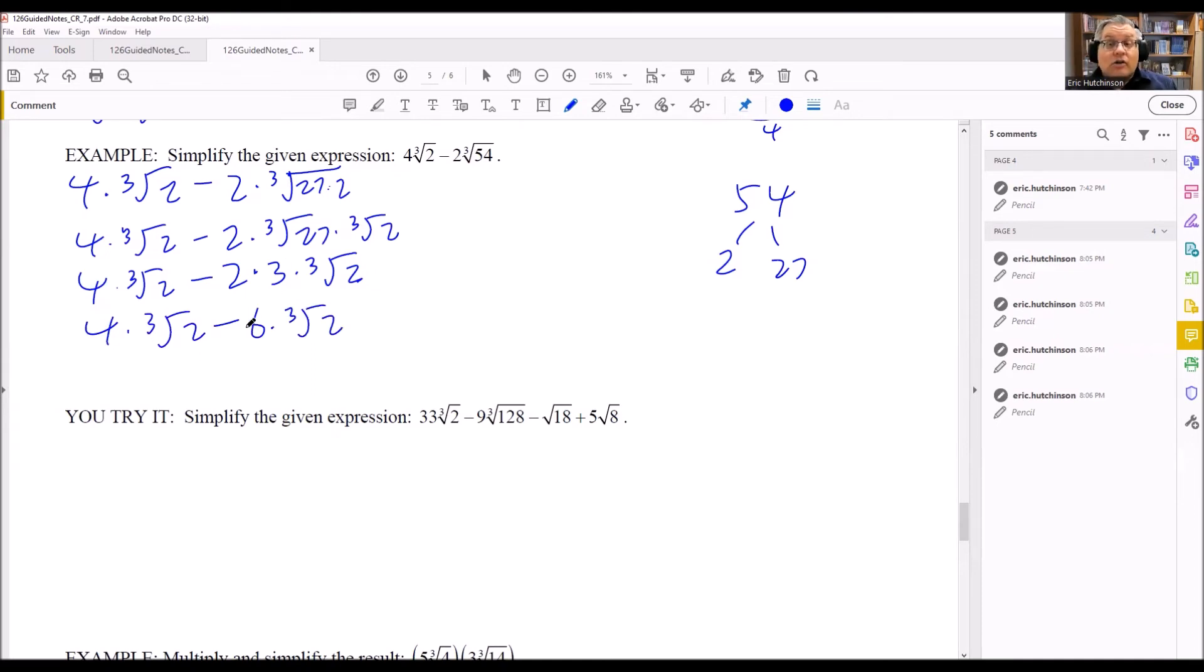And these are like terms. Both of them have a 2 inside and both of those are a cube root. Which means that I can subtract these. 4 minus 6 is minus 2. And I just put the cube root of 2 on the end. That would be the answer for that one.